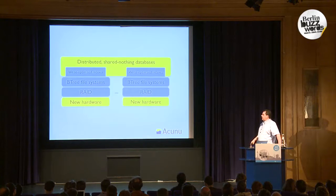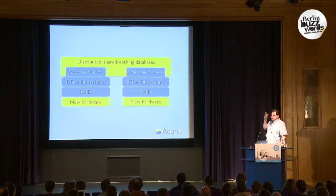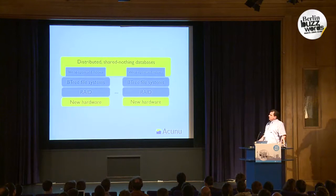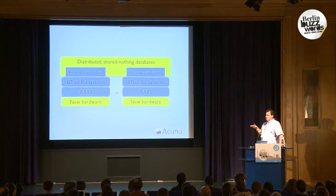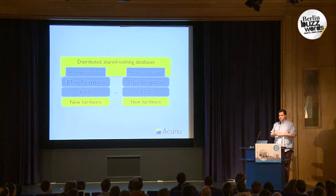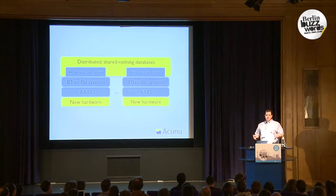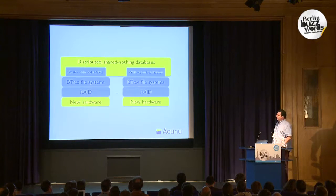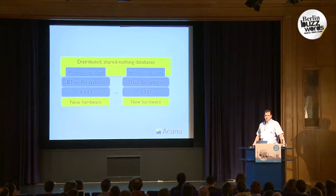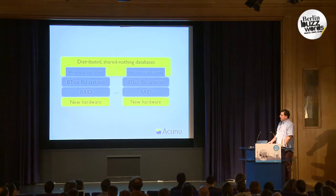As of 2007, that leaves our stack looking more like this: distributed databases with purpose-built, write-optimized indexes, still persisted to disk with B-tree based file systems. We're still using RAID, but these days more to aggregate for throughput and capacity — more like RAID 0 or RAID 1+0. And our hardware is now processor speeds measured in gigahertz, multicores, SSDs, and SAS drives.